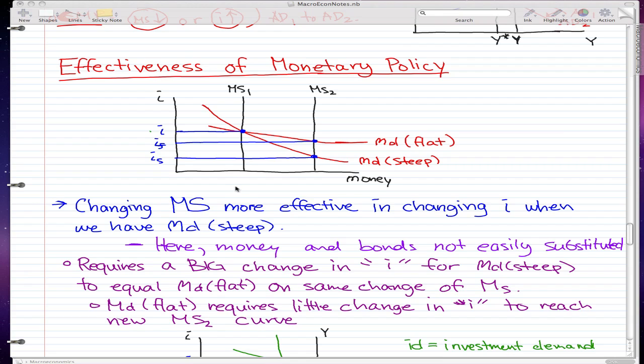Let's start off saying that we change MS1 to MS2. It is more effective for changing MS when we have MD steep. What I mean by this is that when we change MS1 to MS2, the bigger change happens when we have MD steep because I moves more.